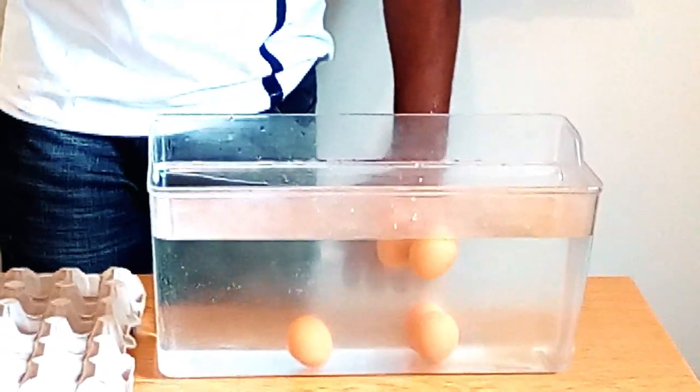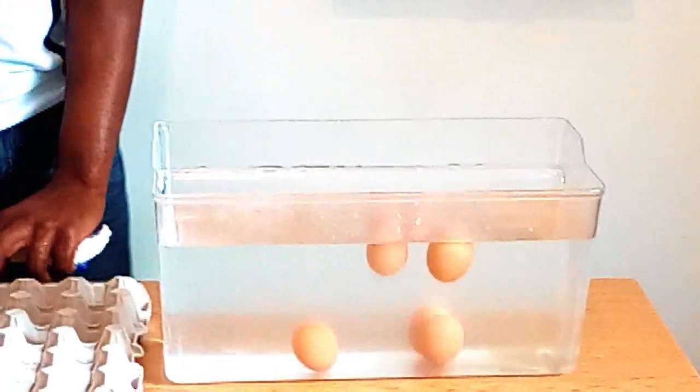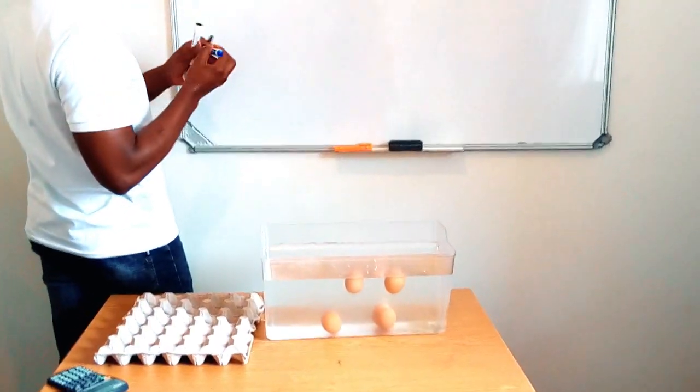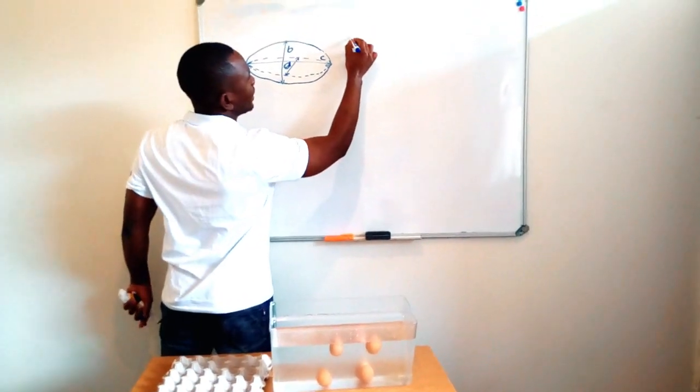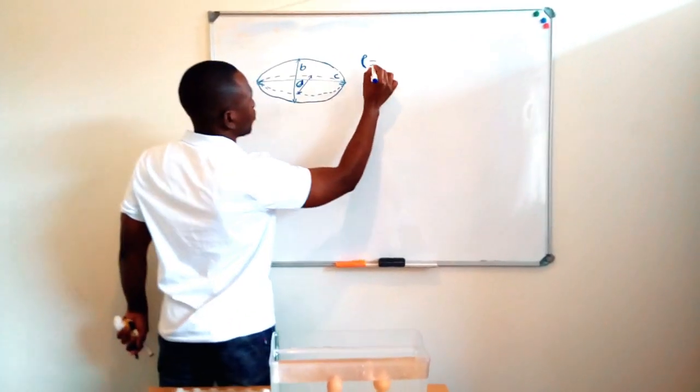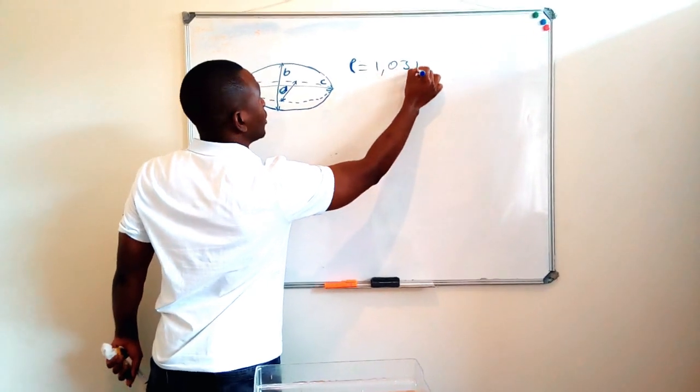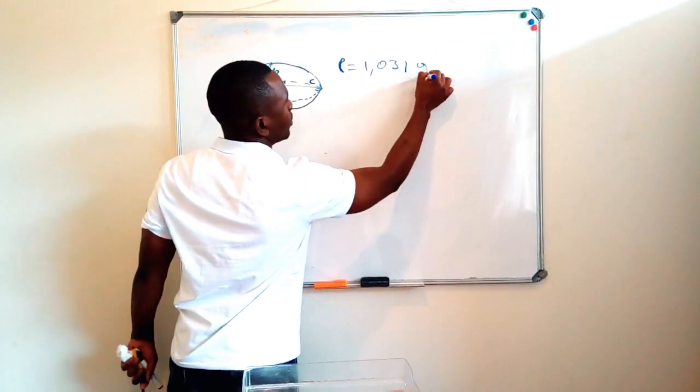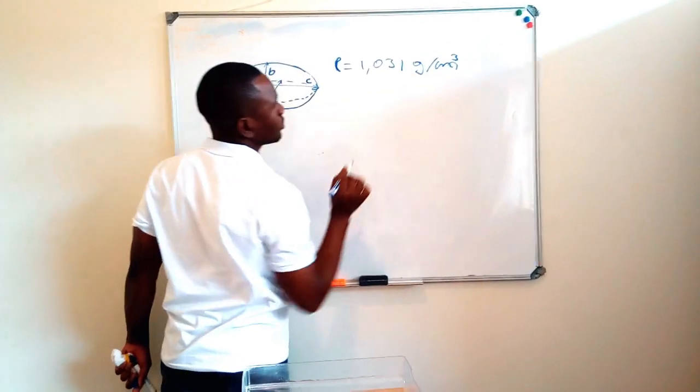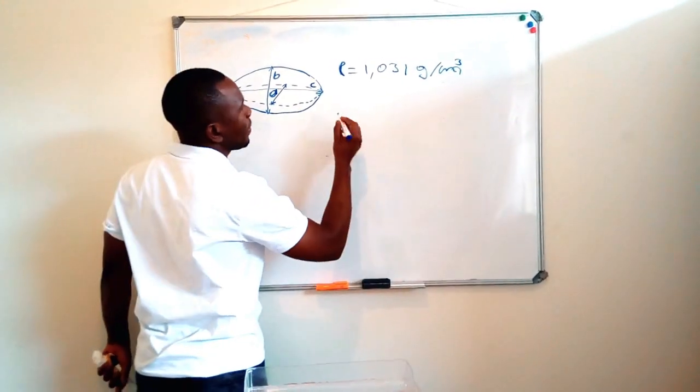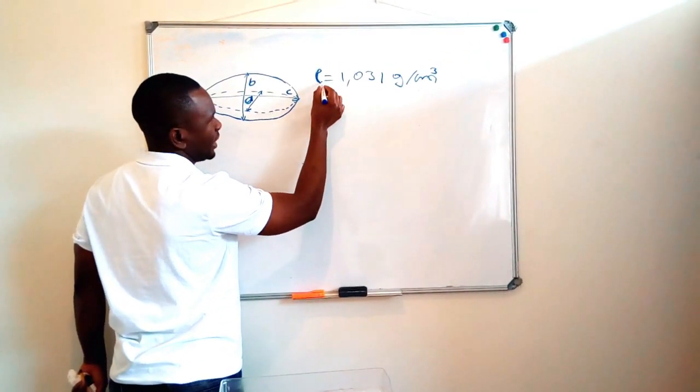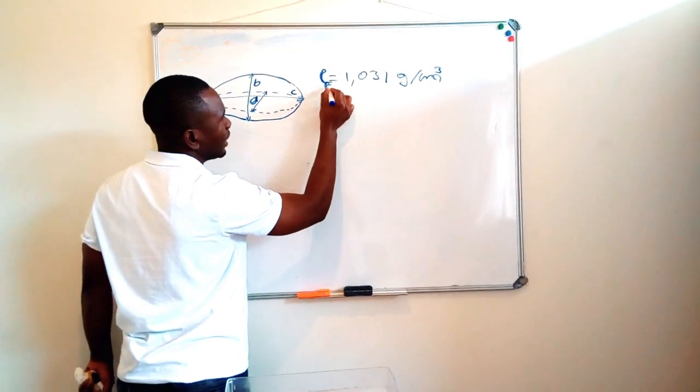So now I'm going to try to demonstrate to you why this is happening mathematically. Let's go. A normal fresh egg has a density of 1.031 grams per centimeter cubed. And then this water here, that is for a normal egg, a fresh egg.